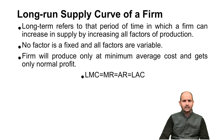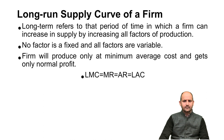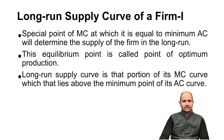In the long run, the firm will produce only at minimum average cost and earn only normal profit. This is the condition of perfect competition in the long run. The equation is: LMC (long-run marginal cost) = MR = AR (average revenue) = LAC (long-run average cost). The special point of MC at which it equals minimum average cost determines the supply of the firm in the long run. This equilibrium point is called the point of optimum production.